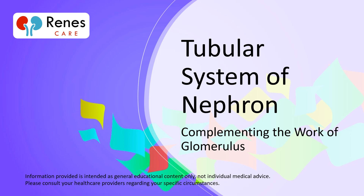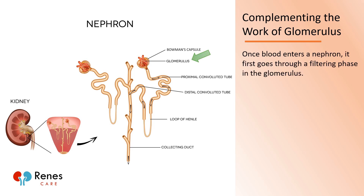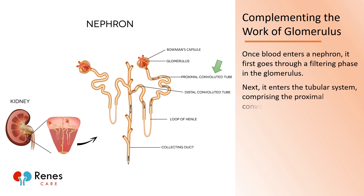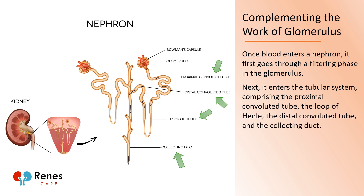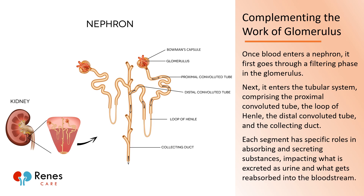The tubular system of the nephron complements the work of the glomerulus. Once blood enters a nephron, it first goes through a filtering phase in the glomerulus. Next, it enters the tubular system, comprising the proximal convoluted tube, the loop of Henle, the distal convoluted tube, and the collecting duct. Each segment has specific roles in absorbing and secreting substances, impacting what is excreted as urine and what gets reabsorbed into the bloodstream.